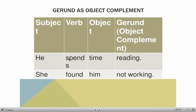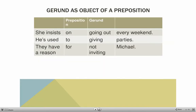An object complement can also go after a noun: 'He spends time reading,' 'She found him not working.' This came out a little funny — that happened when I uploaded the slideshow, don't worry about it. A gerund can also be the object of a preposition.